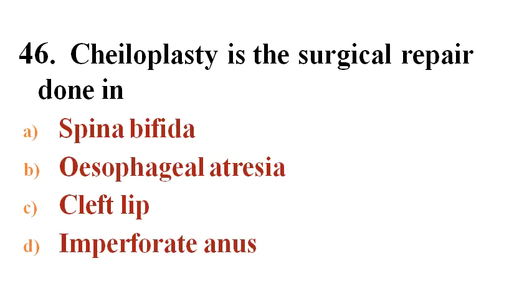Next question: Cheiloplasty is a surgical repair done in? Options A. Spina bifida, B. Esophageal atresia, C. Cleft lip, D. Imperforate anus.